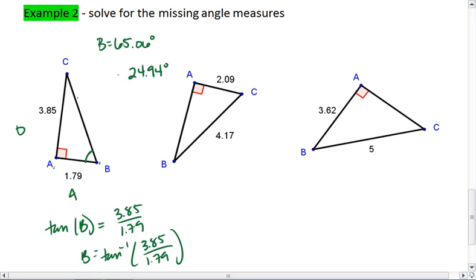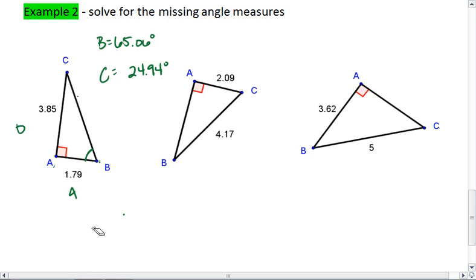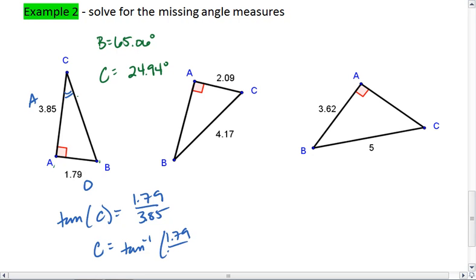Alright. There is another way you could have solved for C. And that would be by saying that CA side is your adjacent, AB is opposite, and we'll use tan of C, then equals 1.79 over 3.85.